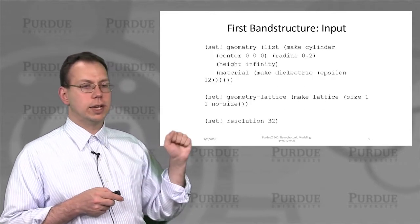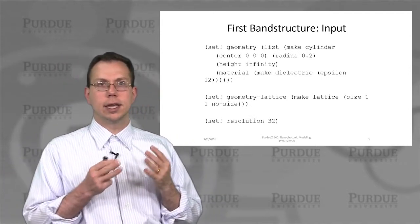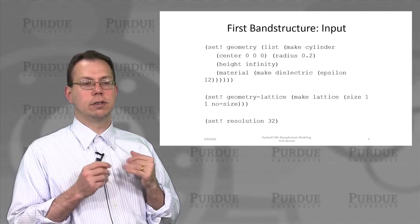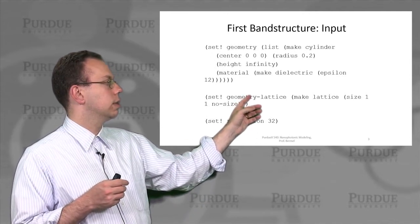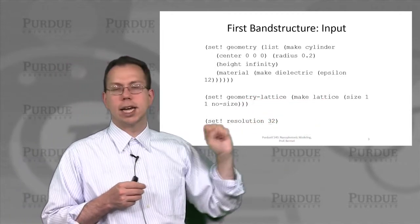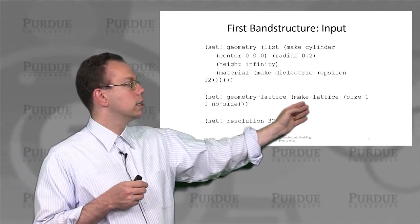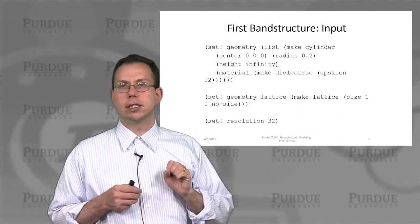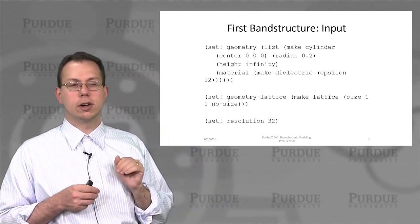Then we actually define the geometry itself. So as I mentioned, it's a square lattice, and that's essentially the default value. We don't actually have to define it too explicitly, but we can define this geometry lattice where we have a size of one in the x and y directions, which is pretty much the default anyway.